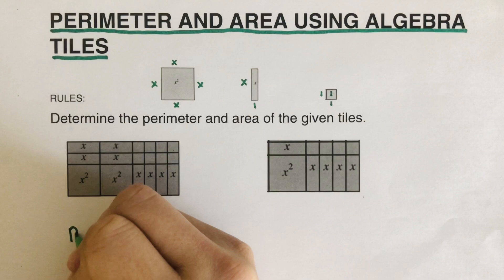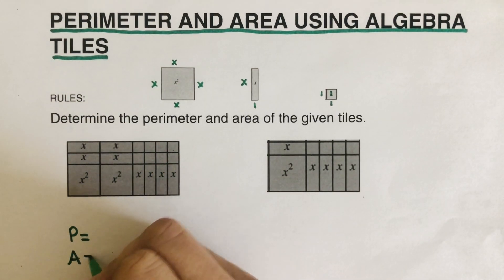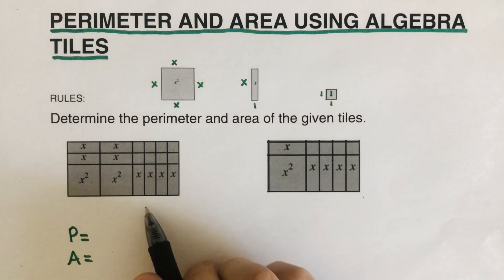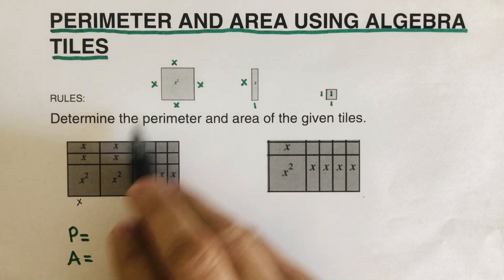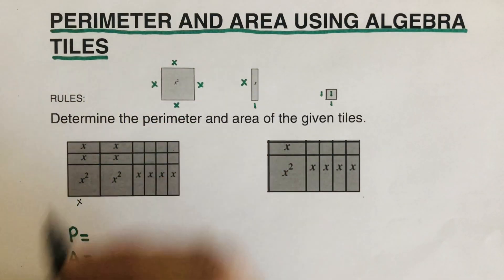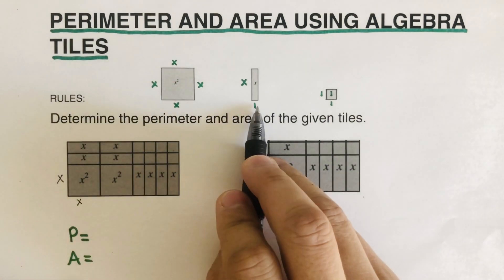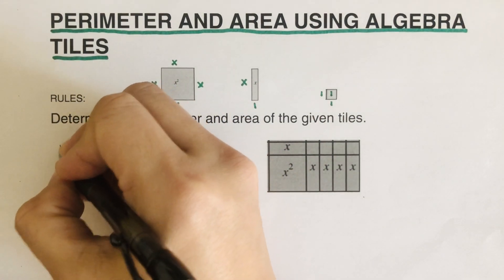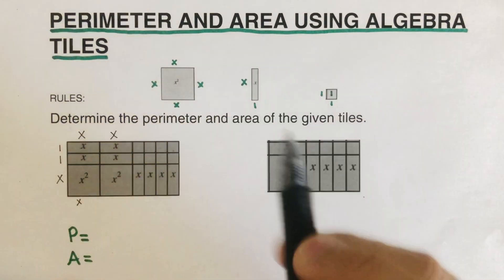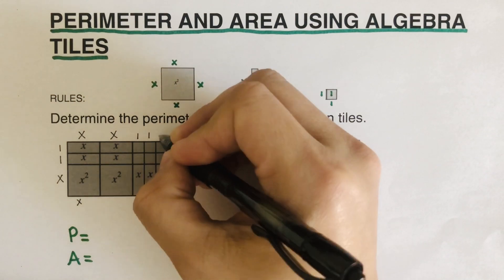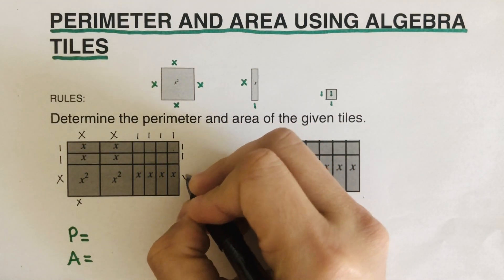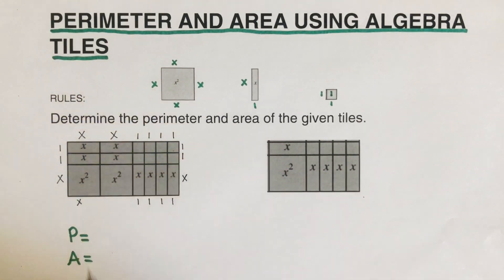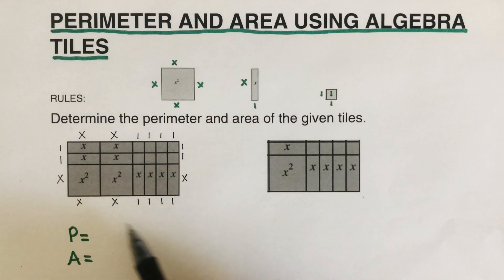I'll write P for perimeter and A for area. To find the perimeter, that's the measure around the figure, so I'm going to label all of the parts around it. This will be x because it's an x² tile — all sides are x's. This side is one, this is one, this is x, and since this is a one-unit tile, these sides are all ones. This side is x, and this is one.